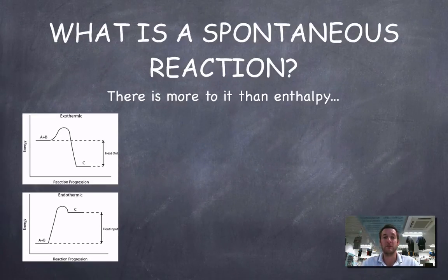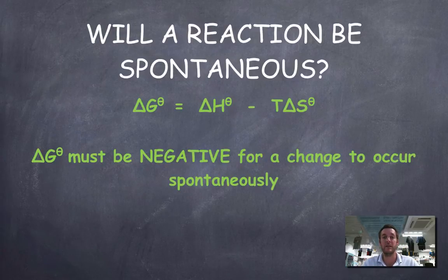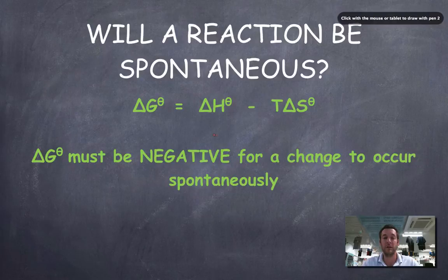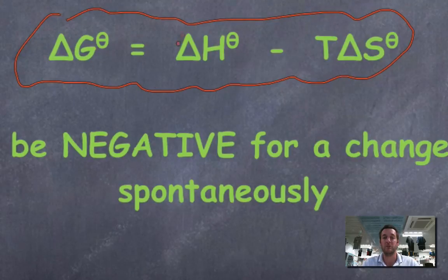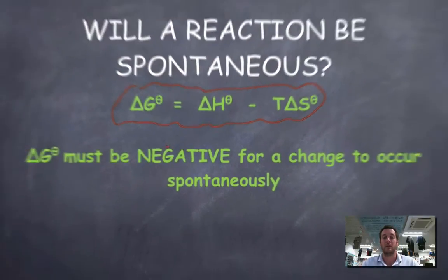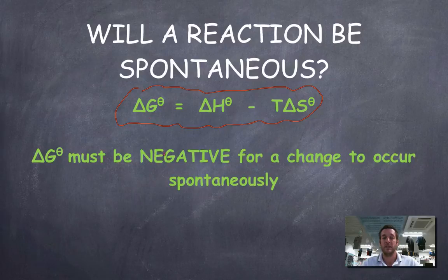Temperature and entropy come into it. When deciding whether a reaction will be spontaneous, we need to use a formula: ΔG = ΔH - TΔS. The Gibbs free energy change equals the enthalpy change minus the product of the entropy change and temperature in Kelvin. This equation is on the data sheet. Only if ΔG is negative will a change occur spontaneously.